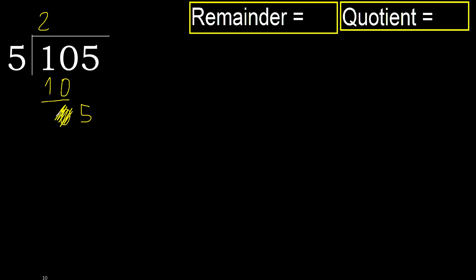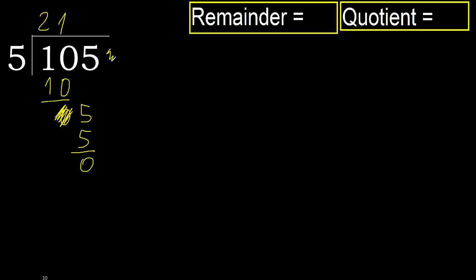Eliminate 0 on this side. 5 — 5 multiply by 1 is 5, it is not greater. Subtract 0. Next. There is no number, therefore finish it.